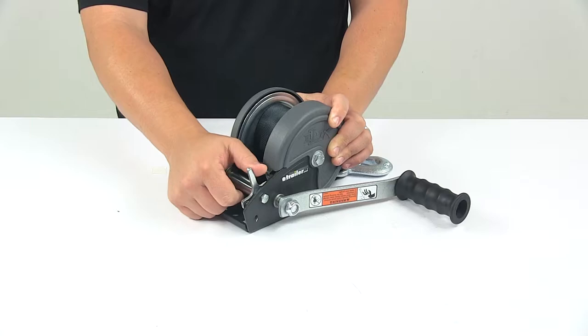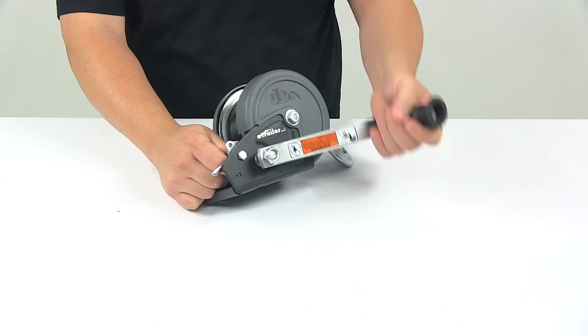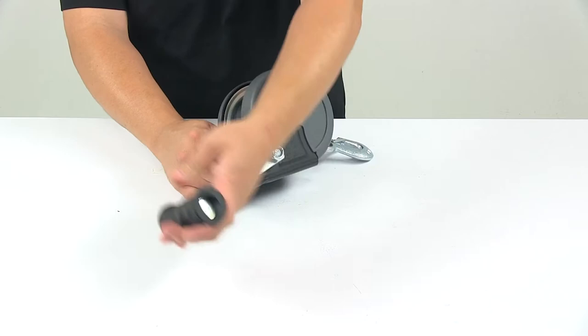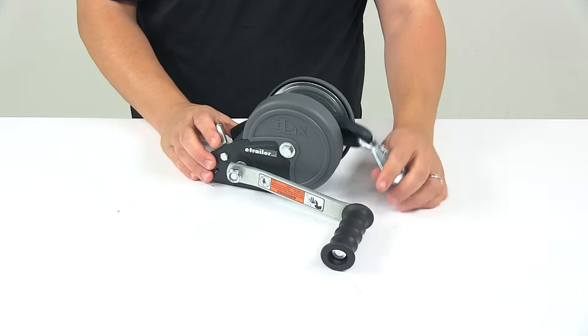This is very easy to use. You'll notice that it has a nice long lever here. That's like a thumb latch, so you can easily flip it. And that allows your free spool mode. And then you can engage it, which allows you to bring in the strap using the handle.